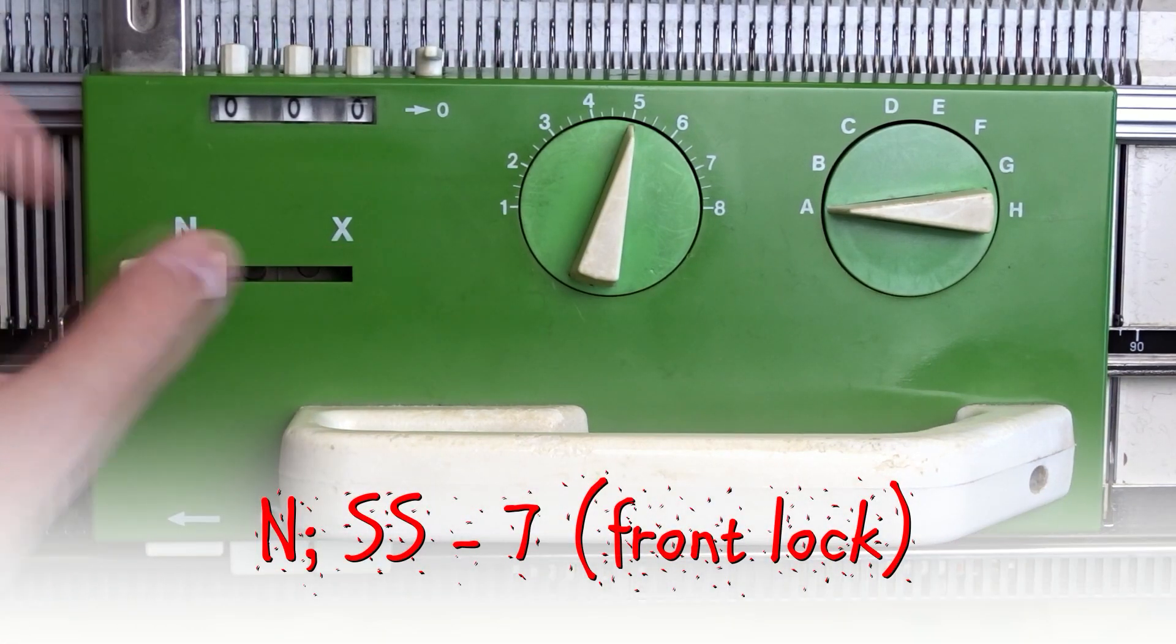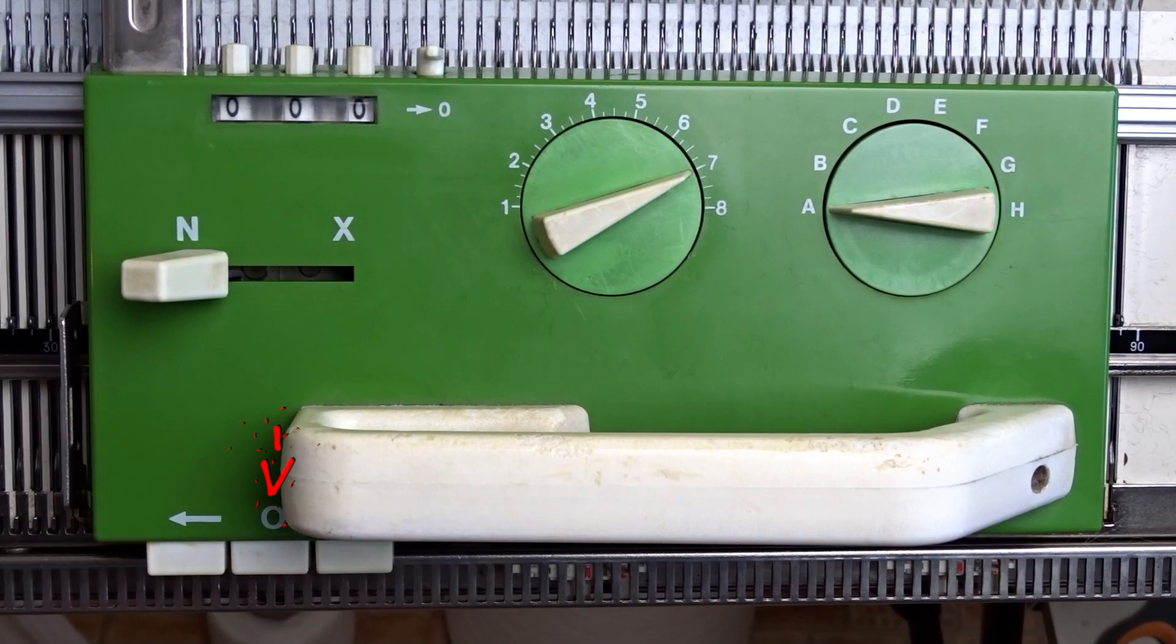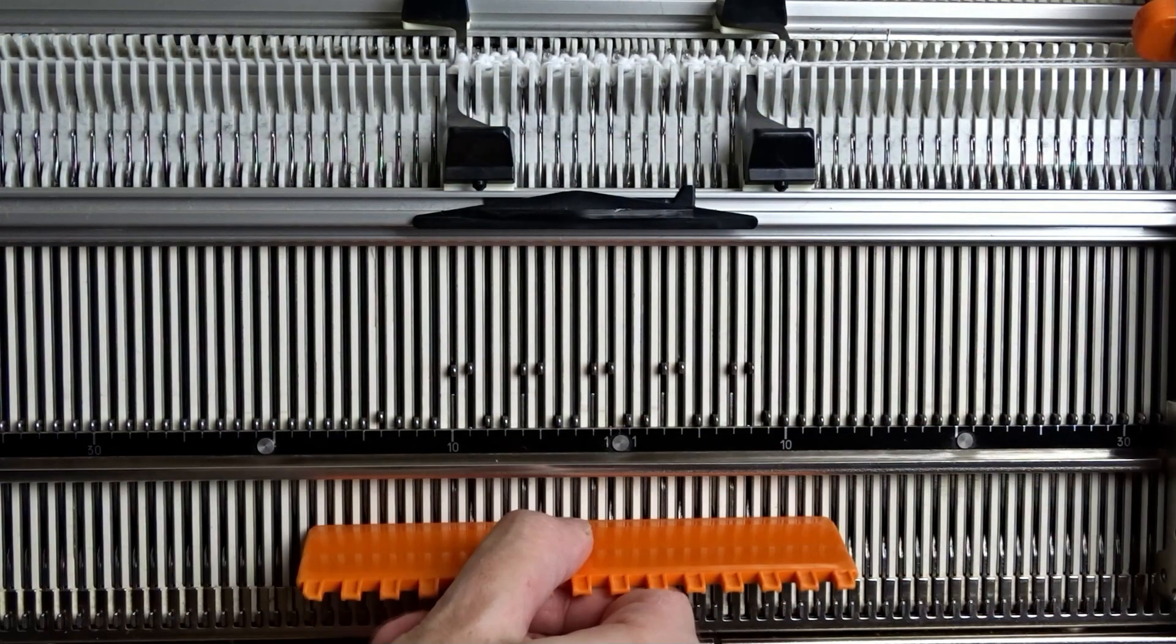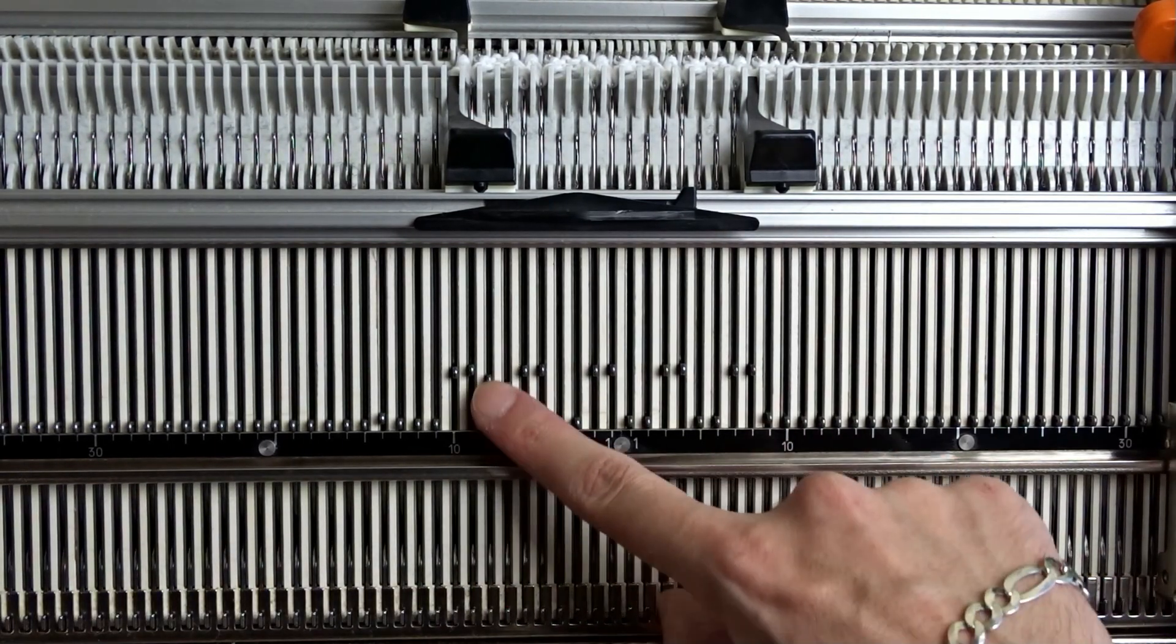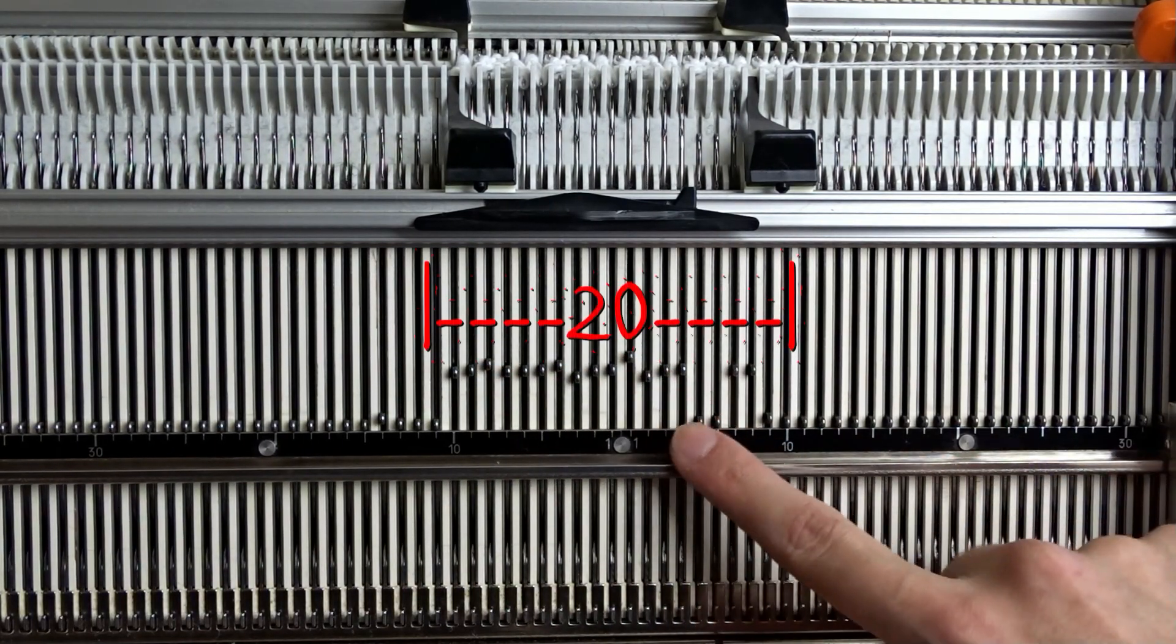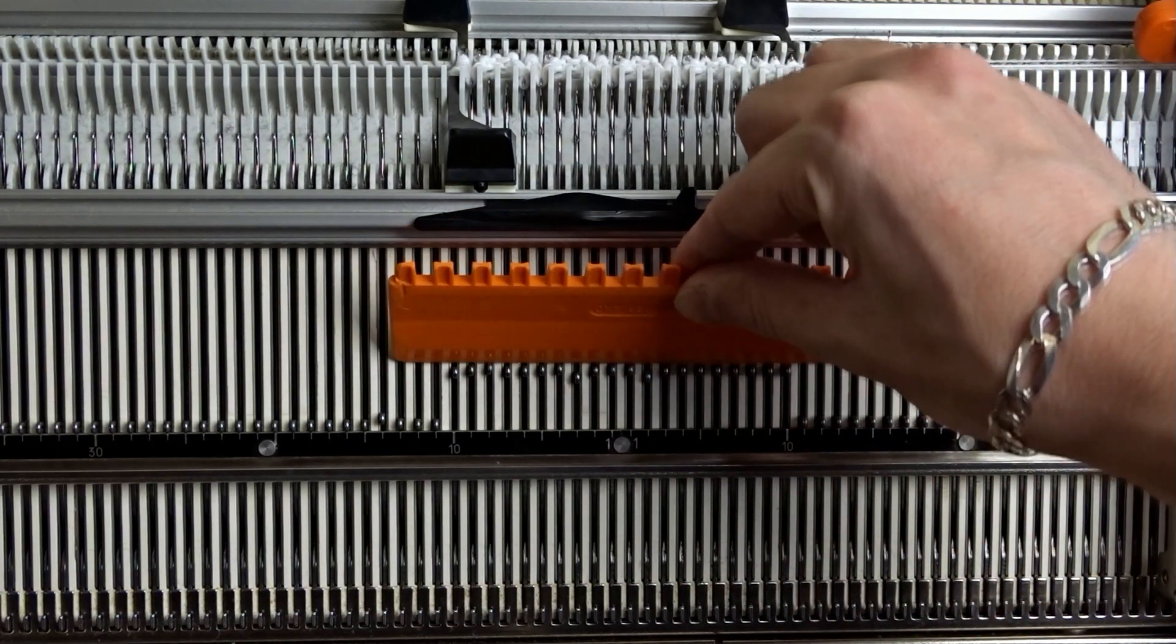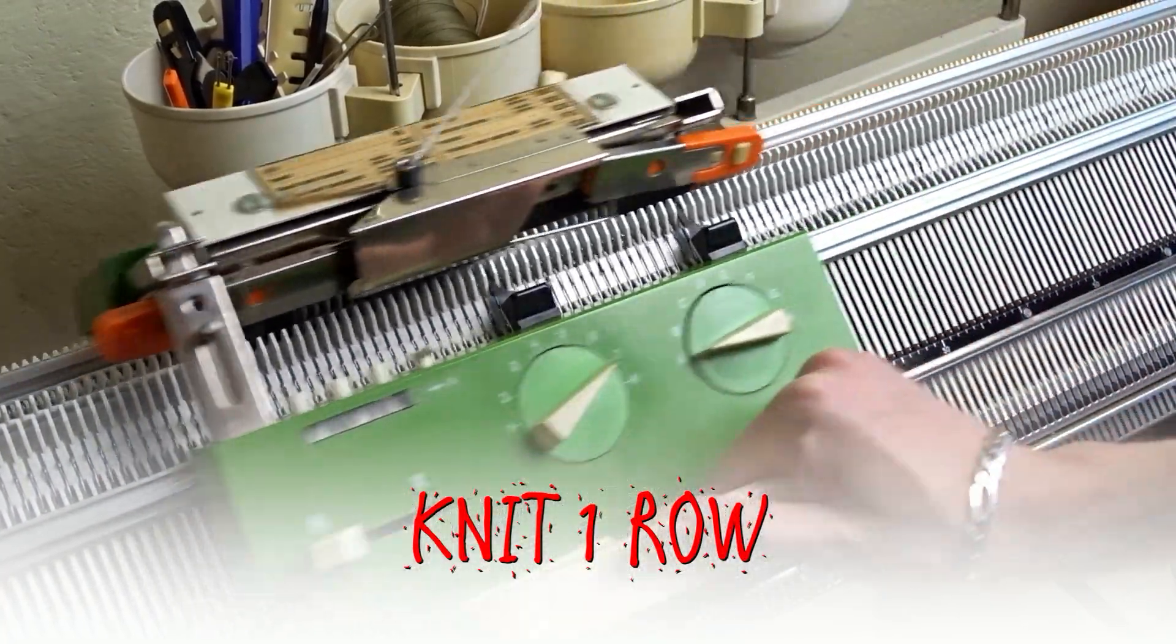Set both locks to end and increase the stitch size to 7. Press the 0 key to disengage the arrow key. Put all pushers out of working position. Now raise the needles on the front bed. You must have 20 needles in working position on the front and 20 needles in working position on the back bed. Knit one roll and lower the front bed.